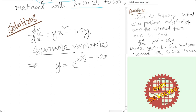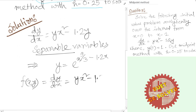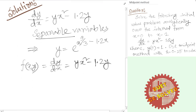We will compare the true value and the midpoint method approximation. Now we will write the midpoint method. The midpoint method formula: y(x_{i+1}) equals y_i plus something. We write it as y_m of x_i equals y_i.